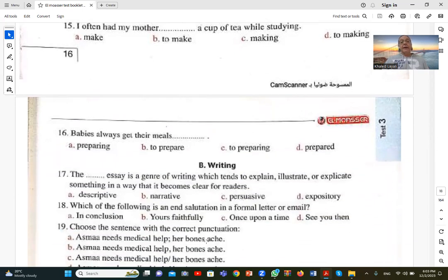Number sixteen. Babies always get their meals prepared. Someone else prepares the food for them. الأطفال الصغيرين لا يحضروا الأكل. Get the meals prepared means other people or adults prepare the meal for the babies. Get their meals prepared. Get plus object plus prepared in past participle form. D is correct.